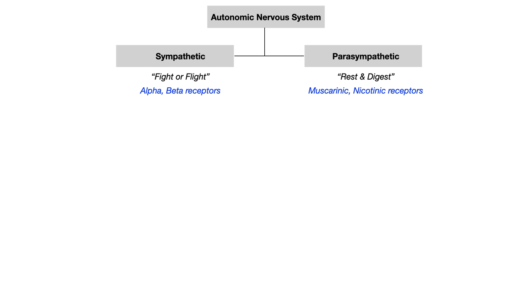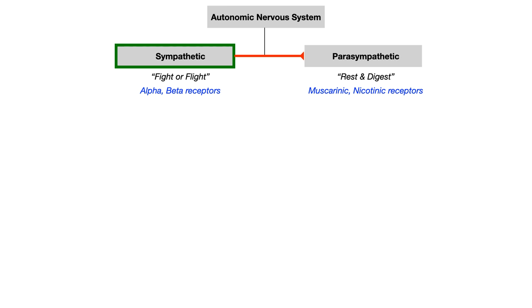One important thing to point out is that these two subsystems of the autonomic nervous system work opposite one another. If the parasympathetic nervous system is activated, it inhibits the sympathetic nervous system, and likewise if the sympathetic is activated it inhibits the parasympathetic. If a bear charges at you and your body activates the sympathetic nervous system, you don't want your body doing things needed for digesting a meal — that would be a waste of resources and blood.